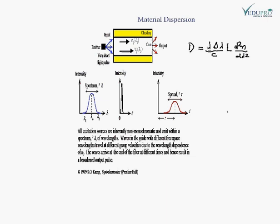Now we will discuss material dispersion. With the help of a diagram and graphical representation, we will try to explain material dispersion. Material dispersion takes place due to the different speeds of different wavelengths in a material medium.